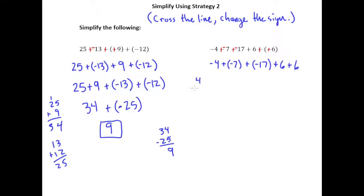4 plus 7 plus 17, and that's going to give me 28. So this is negative 28, and then 6 plus 6 is, of course, 12. And so now I know I'm subtracting 28 and 12, but I also know that my answer will be negative because the negative is with the bigger absolute value. Thank you.